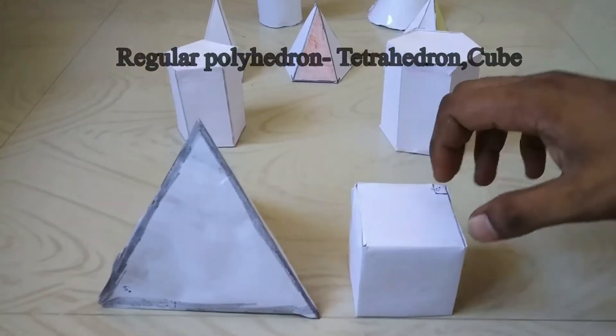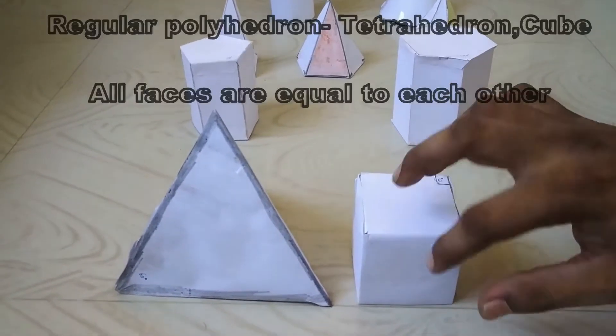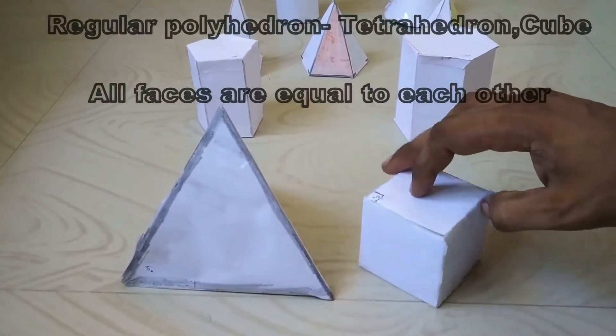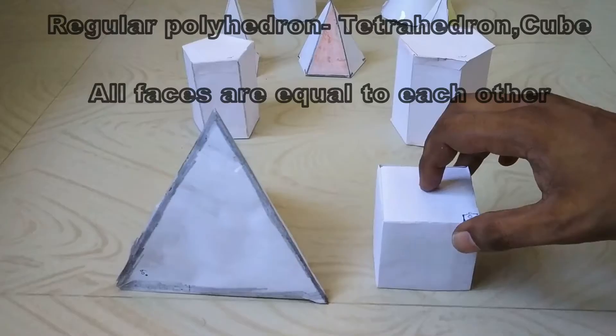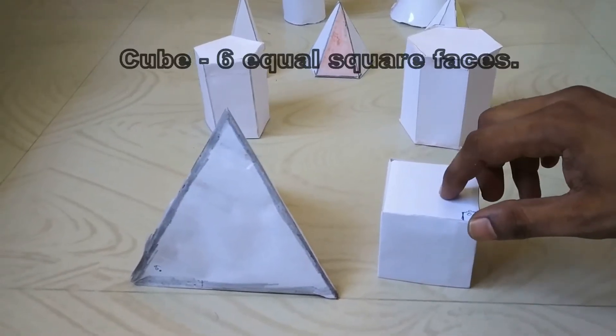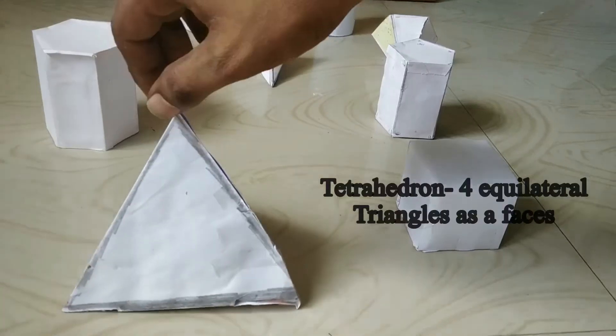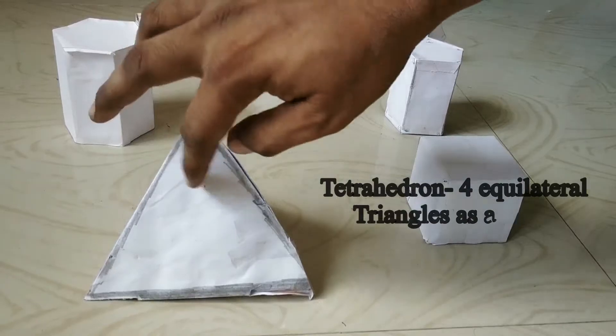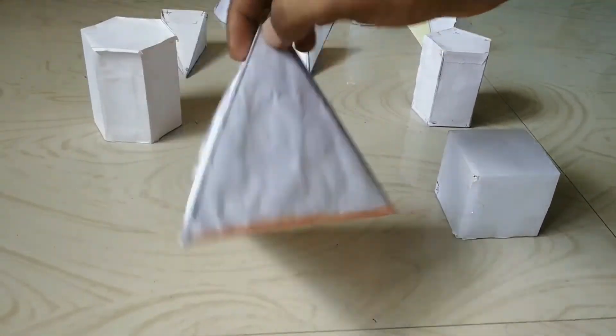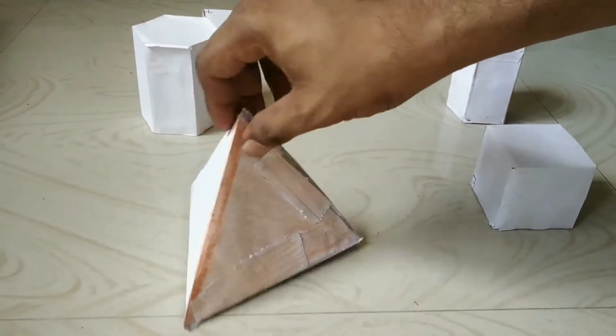that all the faces in the solid are equal to each other. In a cube, we have six equal square faces with edges and corners. In a tetrahedron, we have four equilateral triangles, and the angle between the edges is 60 degrees.